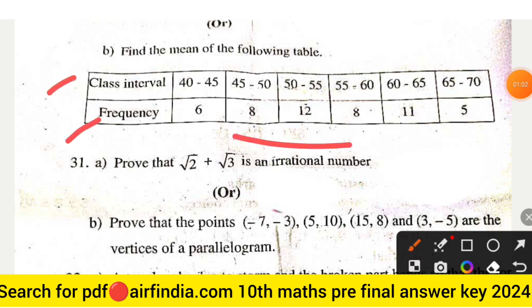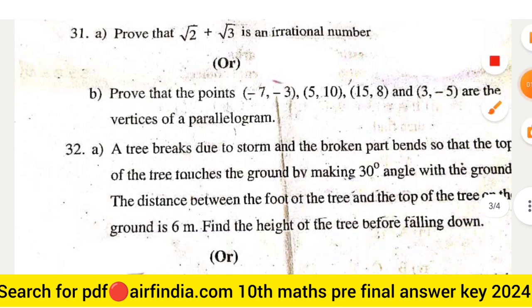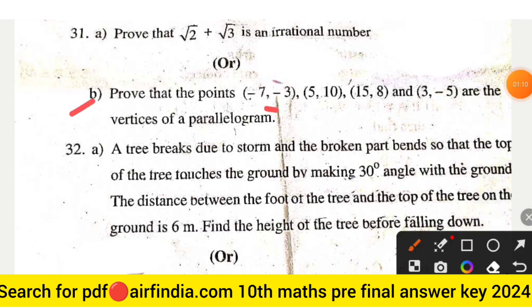Question 31: Prove that √2 + √3 is an irrational number. Or the optional question: Prove that the points (-7, -3), (5, 10), (15, 8) and (3, -5) are the vertices of a parallelogram.